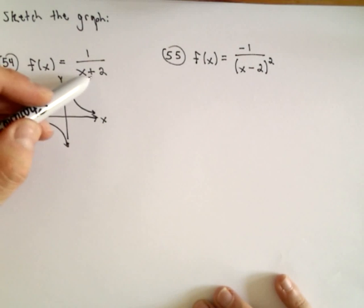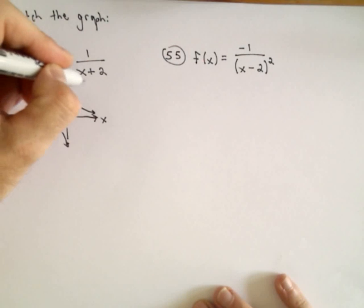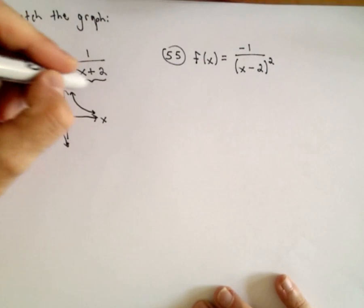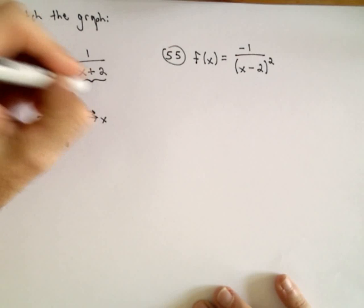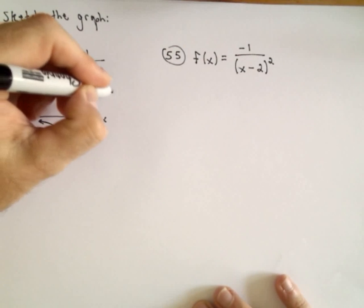So, instead of just 1 over x, we have 1 over x plus 2. So, we've replaced the x with x plus 2. Again, all that's going to do is just shift the graph of 1 over x to the left, 2 units.